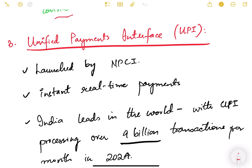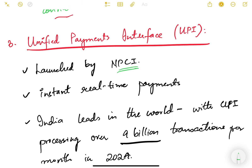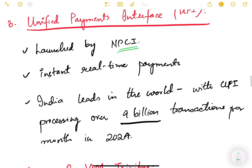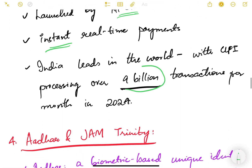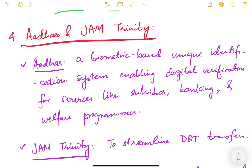The UPI — Unified Payment Interface — was launched by NPCI (National Payments Corporation of India). It enables instant real-time payments at the click of a button. India leads the world with UPI processing over 9 billion transactions per month as of 2024.